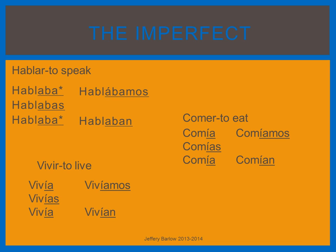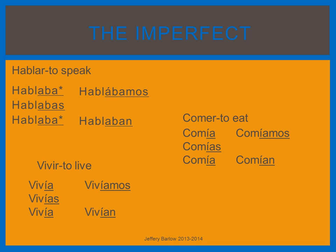The easy thing about the imperfect is that there are only three irregulars in the language, and they also follow the same pattern. The first of the irregulars is the verb ser, meaning 'to be.' Ser in the imperfect is conjugated: era, eras, era, éramos, eran.